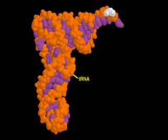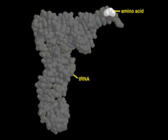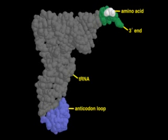All tRNAs have a characteristic L shape, with an amino acid attached to the 3' end at the tip of the shorter arm. The anticodon loop is positioned at the opposing end of the molecule and contains the anticodon base triplet.